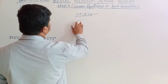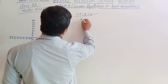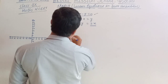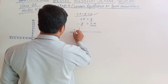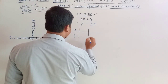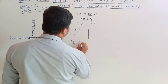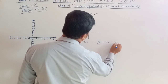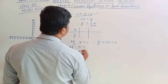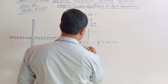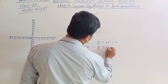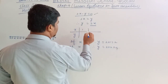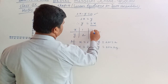So, how can we draw the graph? Here we can write: 2X equal to Y, therefore Y equal to 2X. So we will take values of X and Y. If X equal to 1, then Y equal to 2 times 1, which is 2. If X equal to 2, then Y equal to 2 times 2, which is 4. So the points are (1, 2) and (2, 4).